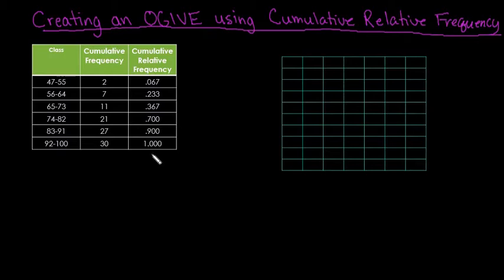Hi, for this video we're going to create an ogive using the cumulative relative frequency. The cumulative relative frequency is the percentage—you can put it as a decimal or a percent—that fall in that particular class.